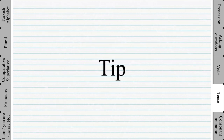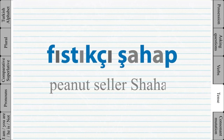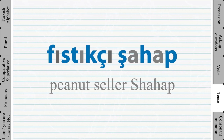A useful tip to remember all the letters is to memorize these two words: 'Fıstıkçı şahap,' meaning 'the peanut seller Şahap' — Şahap is a name, fıstıkçı means the peanut seller. If you look closely, you will see that these two words contain all the letters that you must memorize.